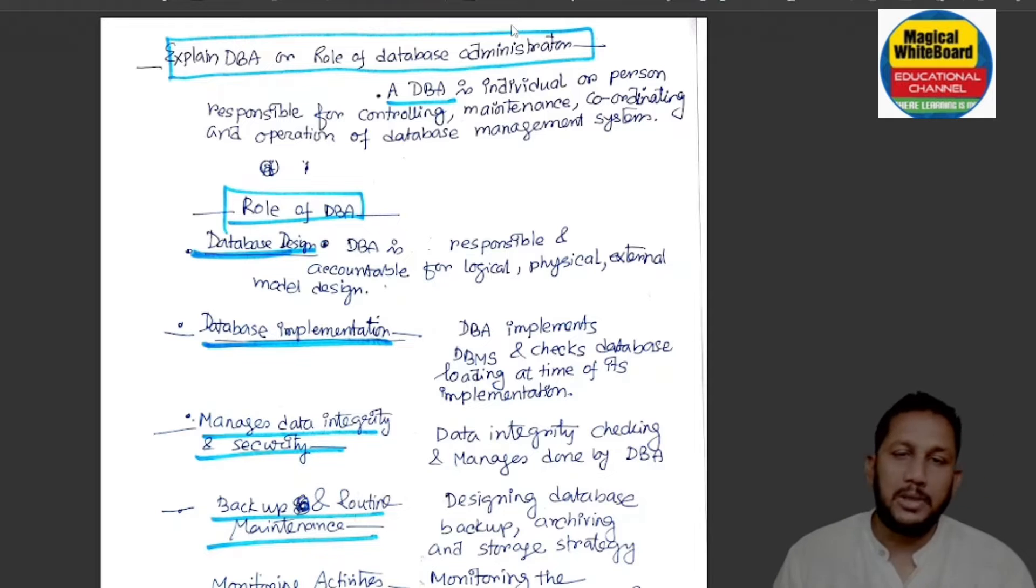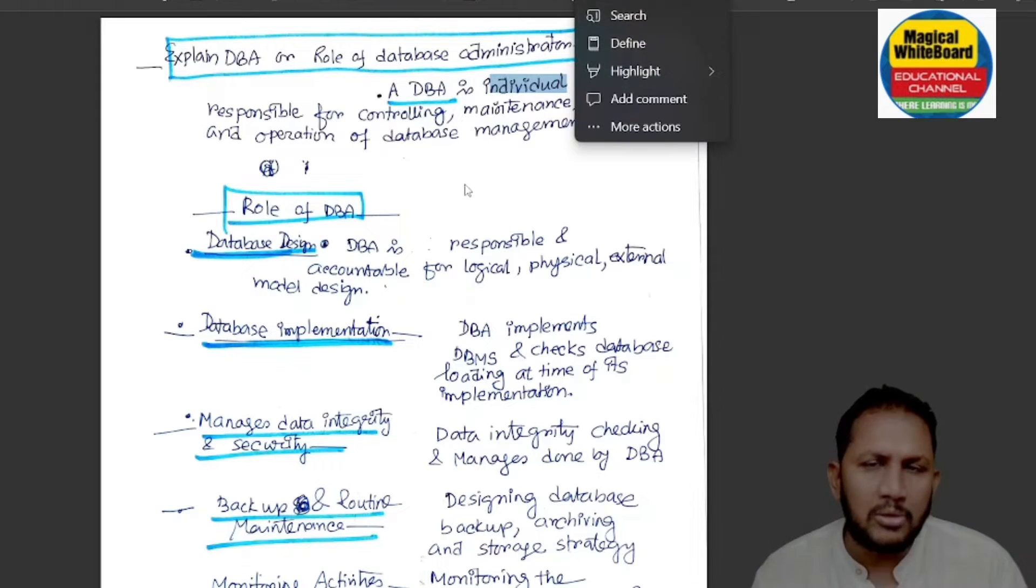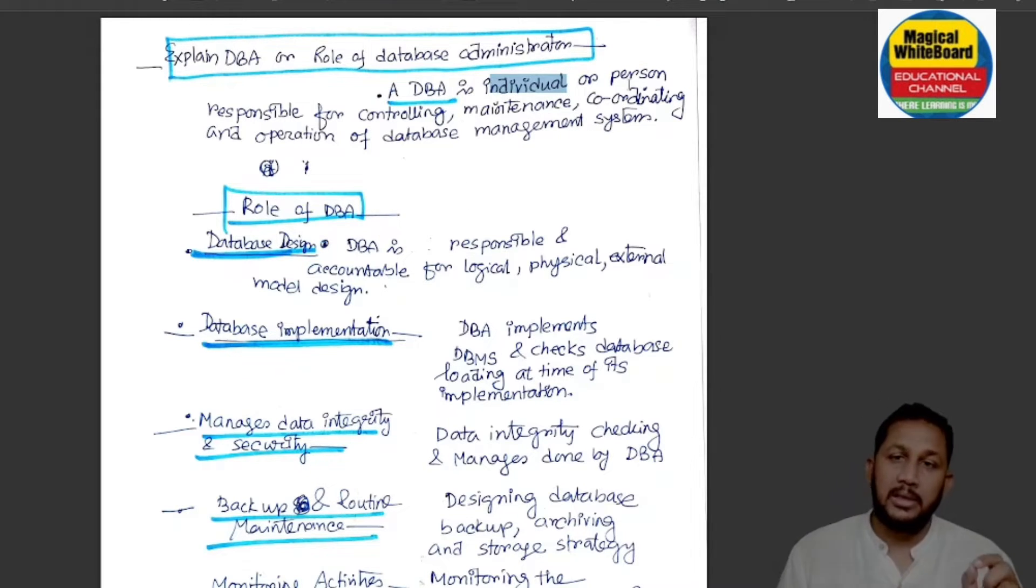First, DBA's role. DBA is an individual or person responsible for controlling, maintenance, coordinating and operation of database management system.